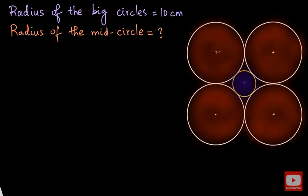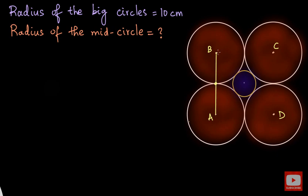So now let me name the center of this circle as A, the center of this circle as B, this as C, and this as D. We also have the point of contact here. Now if we join point A, B, and this point of contact, we get a straight line.